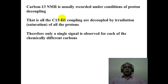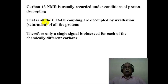In the broadband decoupled carbon-13 spectrum, carbon-13 and proton are simultaneously irradiated — carbon-13 is observed while protons are decoupled. This is a heteronuclear double irradiation experiment. As a result, each chemically different carbon in the skeleton of an organic compound appears as a single line in the NMR spectrum.